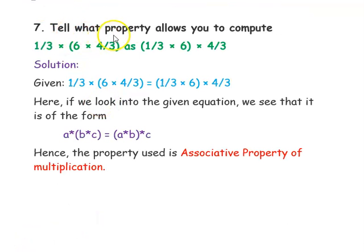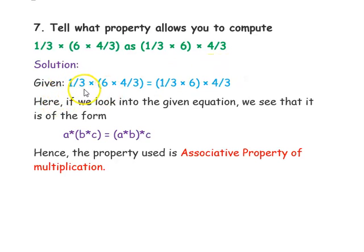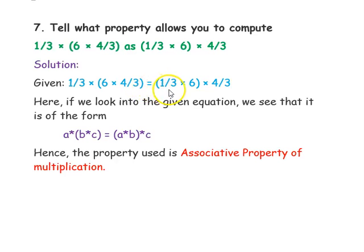The next question is: tell what property allows you to compute 1/3 × 6 × 4/3 as 1/3 × 6 × 4/3. Looking at the question, we can see the form a × b × c = b × a × c. We can clearly say that this is the associative property of multiplication of rational numbers.